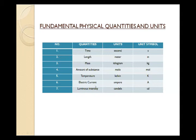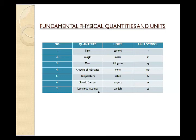Electric current is represented by 'I', its unit is Ampere, and the symbol of Ampere is capital 'A'. Luminous intensity is symbolically represented by 'Lv' (capital L, small v), its unit is candela, and the symbol of candela is small 'cd'.